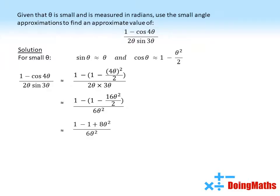Removing the brackets, multiplying through by a negative, and halving the 16 theta squared gives us this. The two ones will cancel out to give us 8 theta squared over 6 theta squared. The theta squared can cancel to give us 8 over 6, which reduces to 4 over 3, and there is our answer.